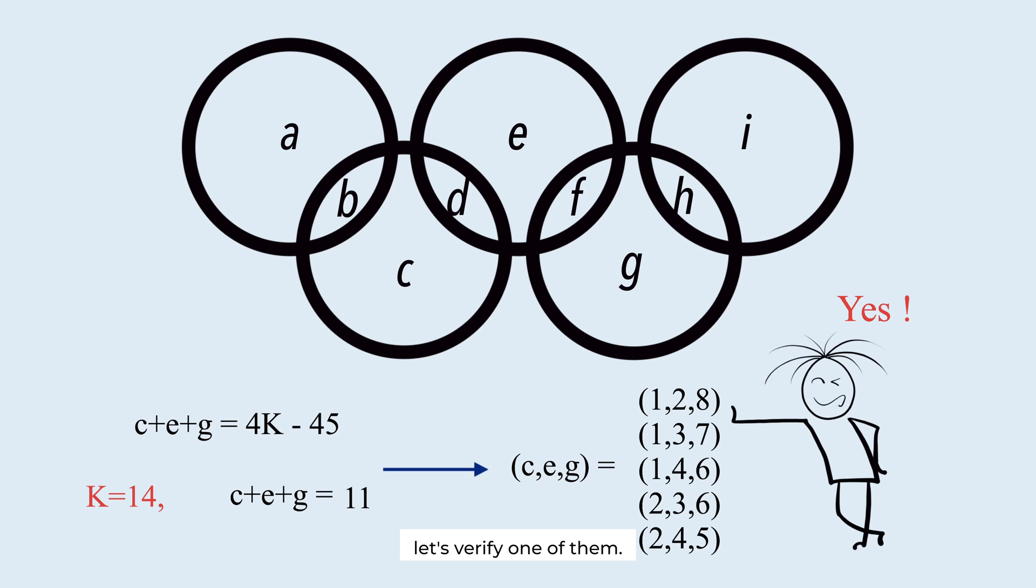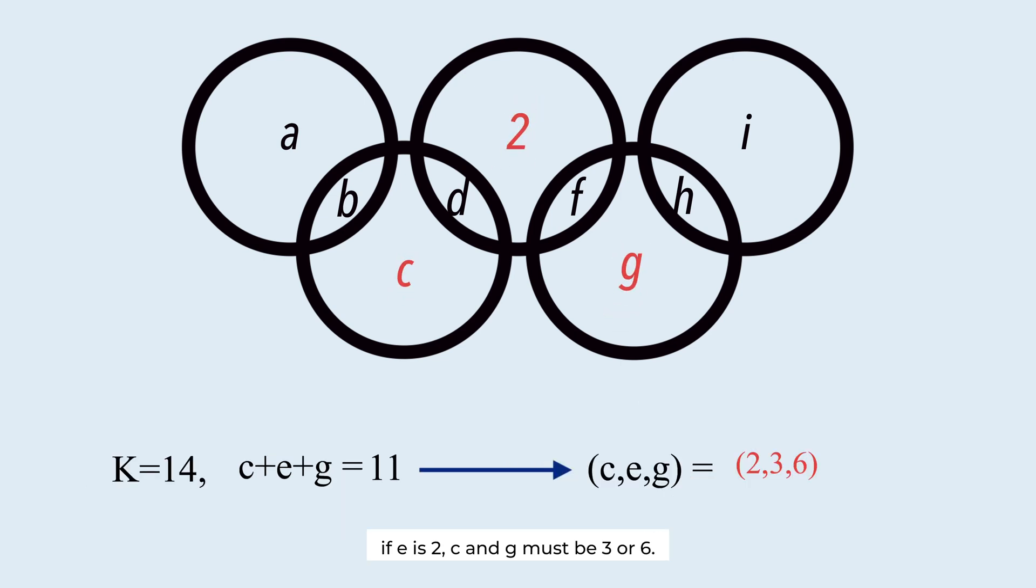Yes, we can. Let's verify one of them. If E is 2, C and G must be 3 or 6. To sum up to 14, the remaining numbers must be 9 and 6. This causes a duplication of 6. So this placement is not a solution. If E is 6, C and G can be 2 or 3. This must be 6. This must be 5. Thus, 6 is duplicated again.